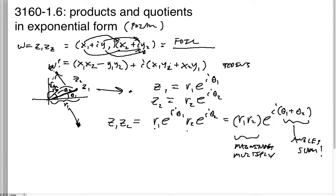So now we know that if I take these two angles and put them together — theta1 and theta2 — I just add them, and combined with the product of the magnitudes, that gives us our w right there.